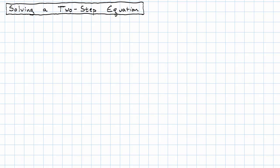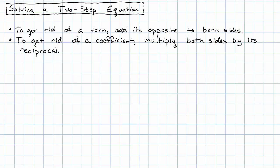So in the last video, we learned two techniques for getting a variable by itself. To get rid of a term, we add its opposite to both sides of the equation, and to get rid of a coefficient, we multiply both sides by its reciprocal.